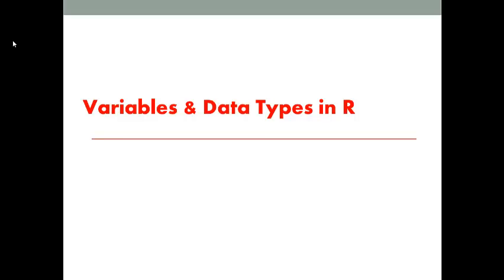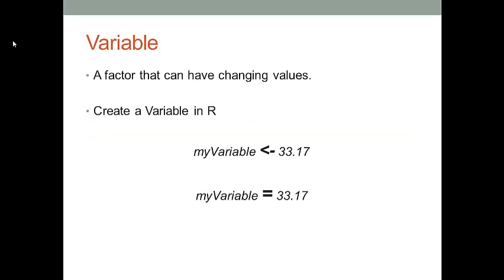Hello everyone. Let's talk about variables and data types in R in this lecture. First, what is a variable? A variable is a factor that can have changing values. For instance, in the mathematics class, you create a variable called x and give different values to this variable x.